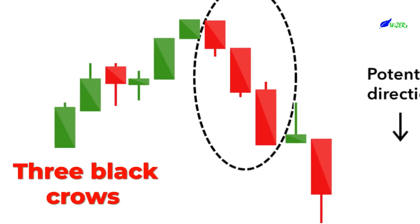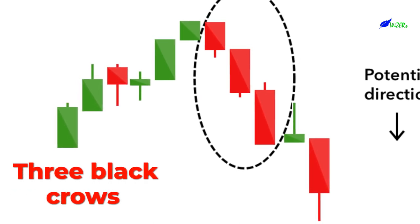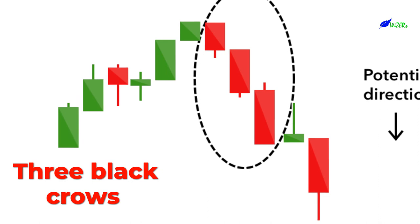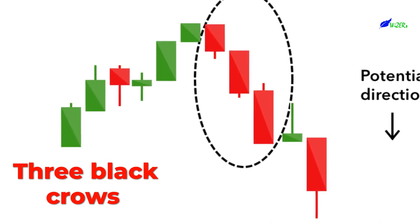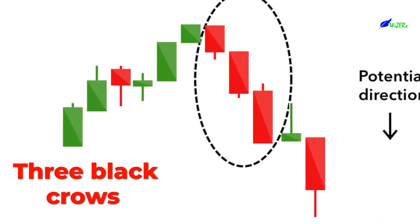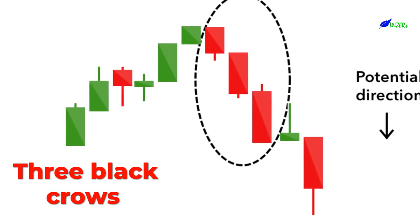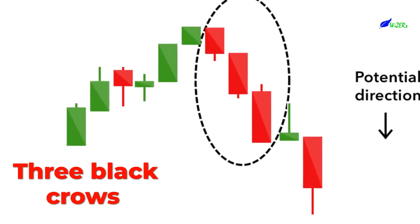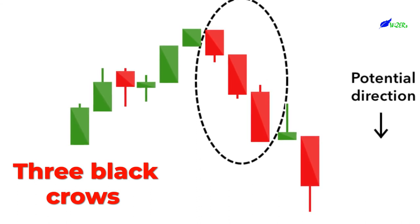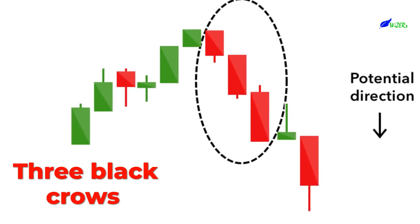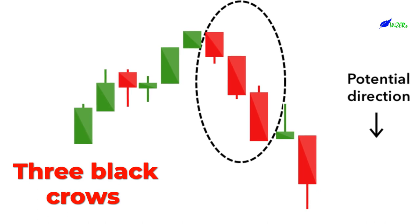Three Black Crows. The Three Black Crows candlestick pattern comprises three consecutive long red candles with short or non-existent wicks. Each session opens at a similar price to the previous day, but selling pressures push the price lower and lower with each close. Traders interpret this pattern as the start of a bearish downtrend, as the sellers have overtaken the buyers during three successive trading days.